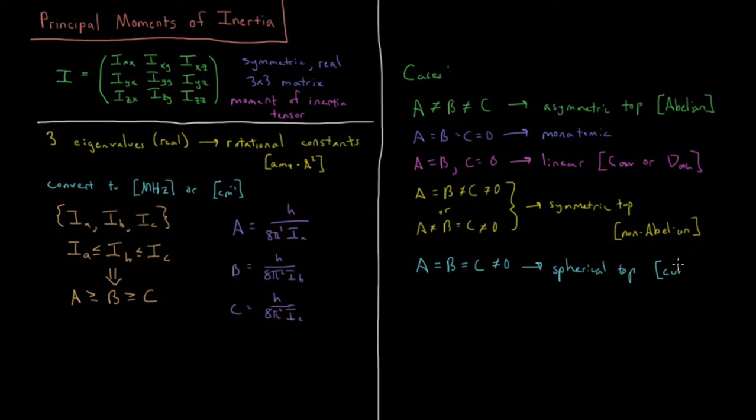Those would be point groups which are called cubic point groups, things like tetrahedra or methane, octahedra, something like SF6, or icosahedra, things like buckyballs, C60.